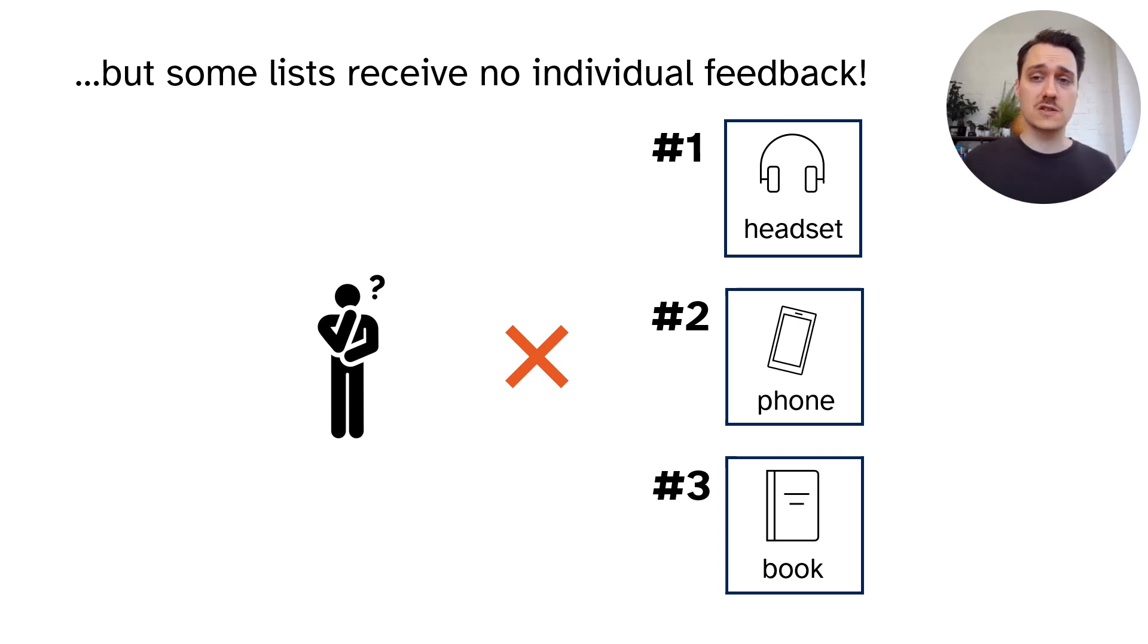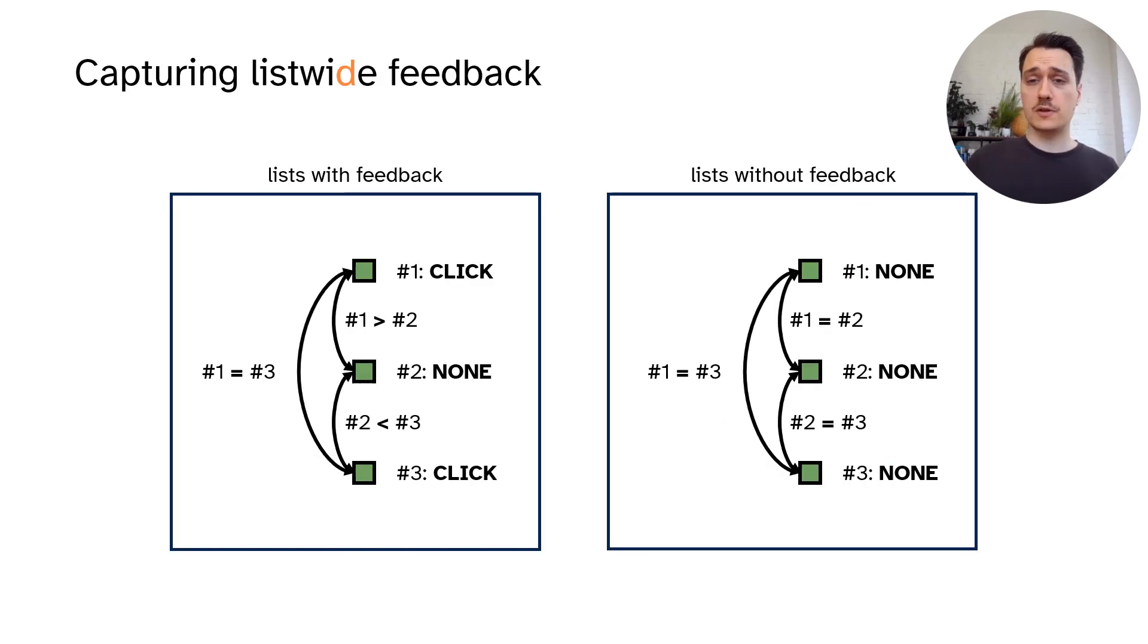We could see this as a signal that such lists have a poor quality and this feedback should not be ignored. However, popular pairwise and listwise loss functions are unable to capture this signal because they only look at relative differences between labels and between scores.